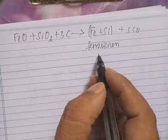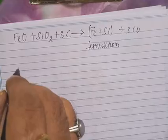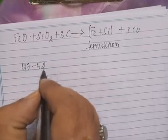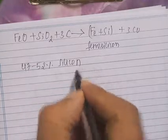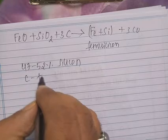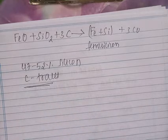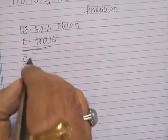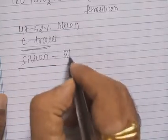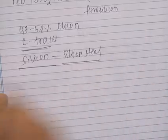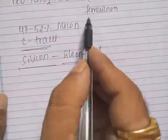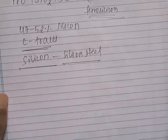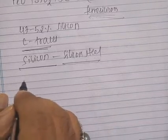Ferro silicon contains 47 to 52% silicon and a small amount of carbon. The uses of ferro silicon: it is used to introduce silicon in the manufacturing of silicon steel. Ferro silicon is added to steel to form silicon steel. It is also used as a deoxidizer in the manufacturing of steel.